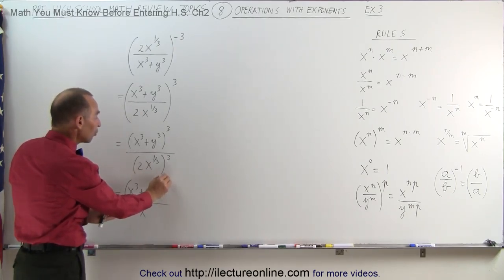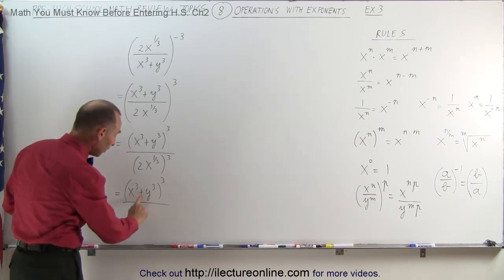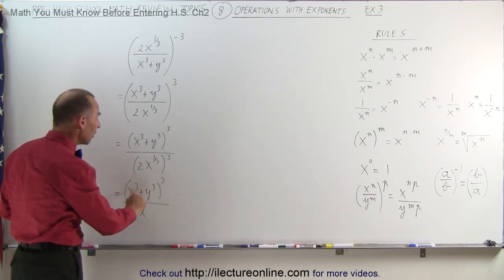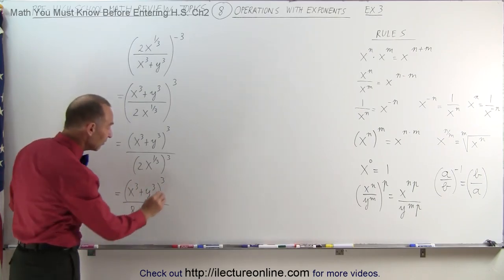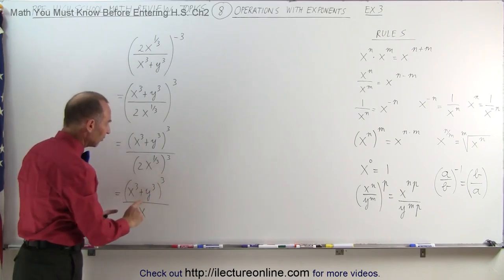Now next you may be tempted to try to divide the x into the numerator. x cubed divided by x would be x squared. But you can't do that for two reasons. First of all, the numerator is in parentheses and it's raised to the 3rd power. You'd have to do this operation first.